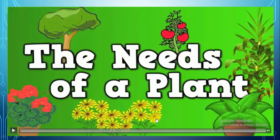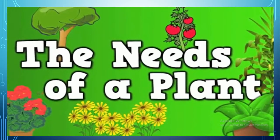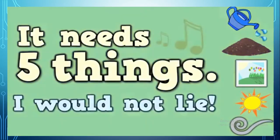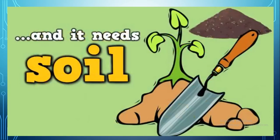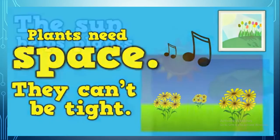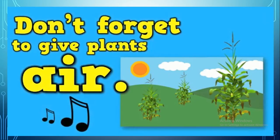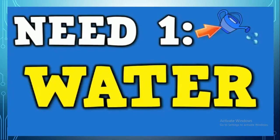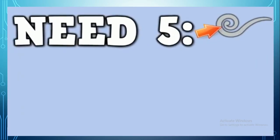Let's watch this song together to know more about the needs of plants. For a plant to stay alive, it needs five things, I would not lie. It needs water so it can grow, and it needs soil just like so. Plants need space, they can't be tight. The sun helps plants by giving light. Don't forget to give plants air. Need one: water. Need two: soil. Need three: space. Need four: light. Need five: air.